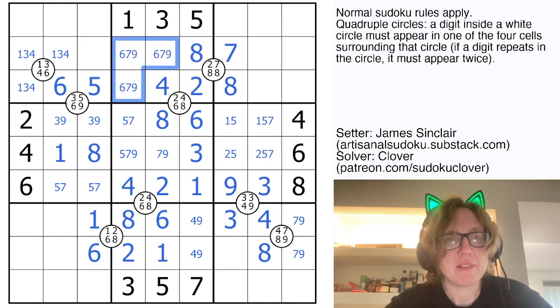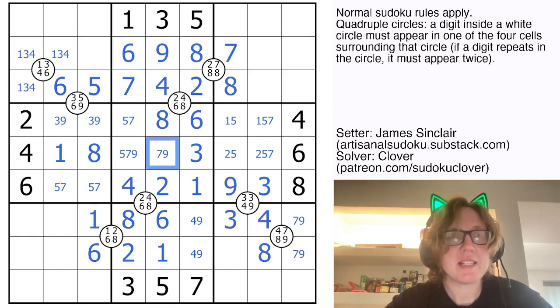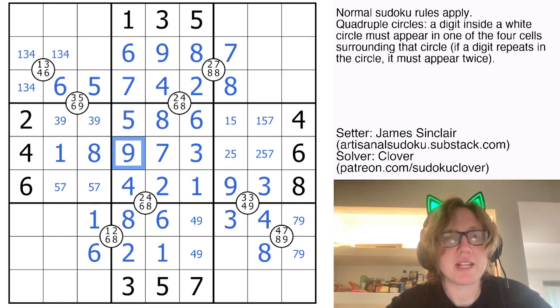Here I need six, seven, and nine to finish the region. There's a seven right there, so I could eliminate seven here. That makes this a seven, gives me a nine and a six, and that's going to finish off this entire region and kind of bounce over here to finish this region.